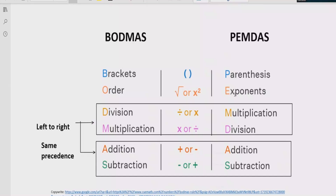We can solve any arithmetic expression using these rules. The rule says if your expression contains any bracket or parentheses, you have to solve that part first. After the bracket, you have to see the exponent or power of any number — if your expression contains any number which has a power, you have to solve that part. Step number three is you have to solve division and multiplication.